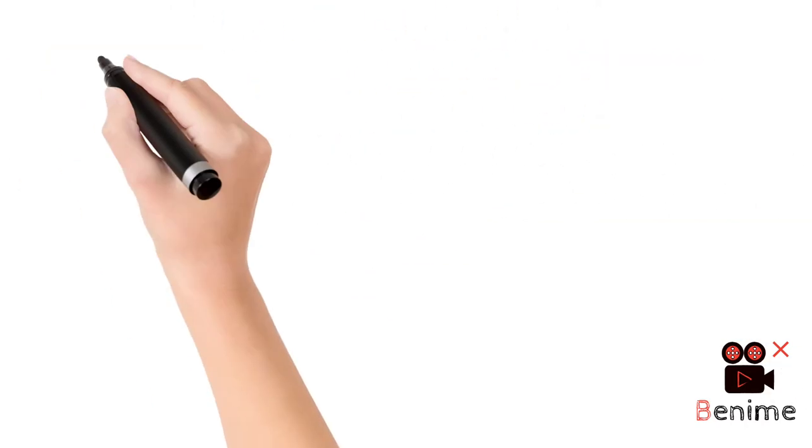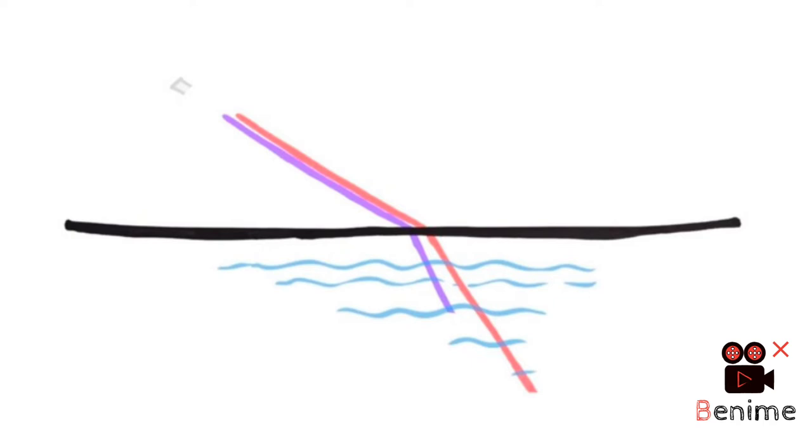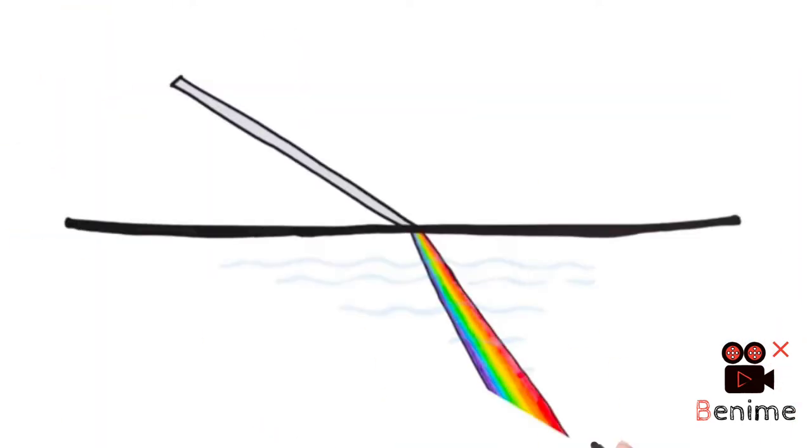But unlike the constant speed of light in a vacuum, the speed of light in water depends on the color. Violet light moves slower in water than red light, so it will bend more as it enters the water. An incoming beam of white light will be spread out and separated into a spectrum of color. We call this dispersion.